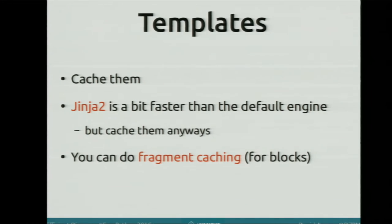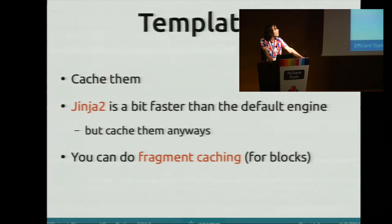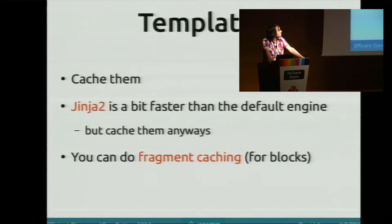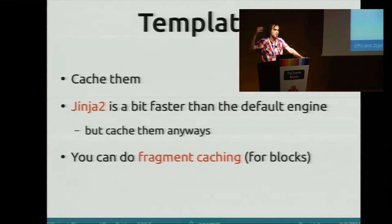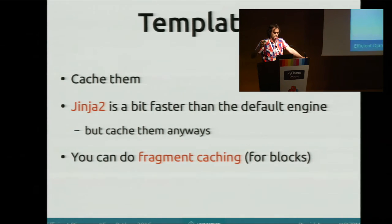About Django templates, the standard templating engine is good enough. Jinja is a bit better, but either way you have to cache all the templates. Django has fragment caching, which means you can cache just little blocks of the templates. You don't need to cache everything at the same time — you can go layer by layer, template by template, and do different caching at different spots.